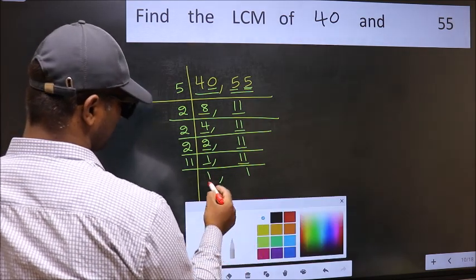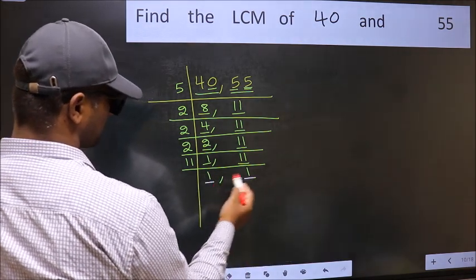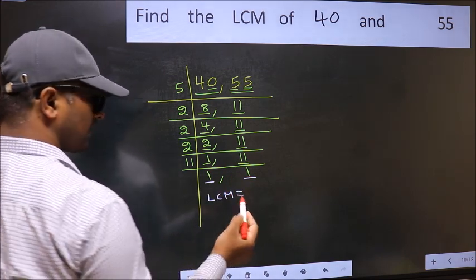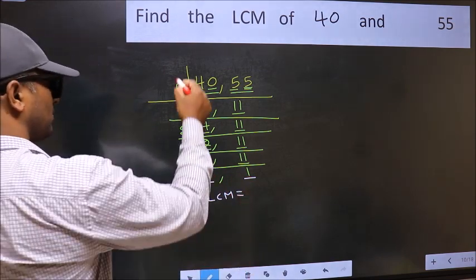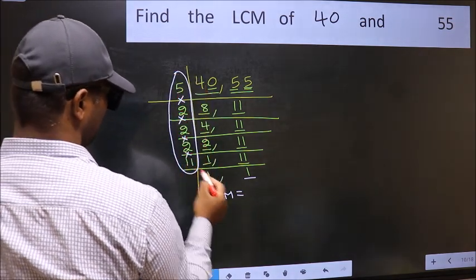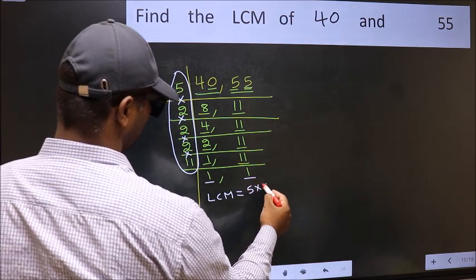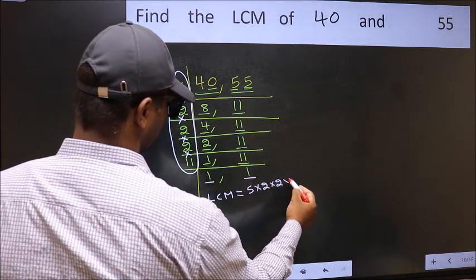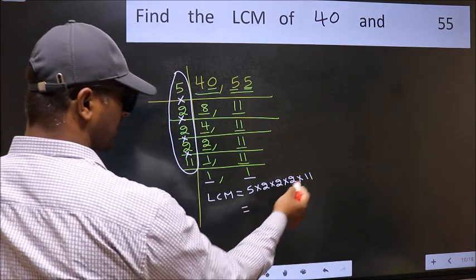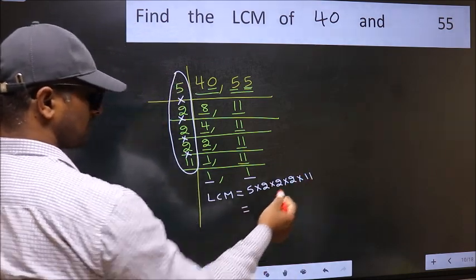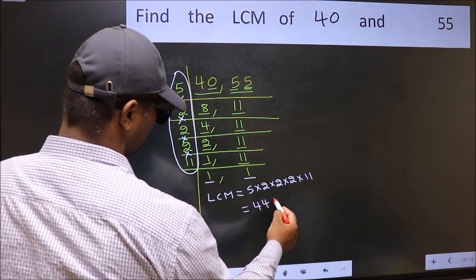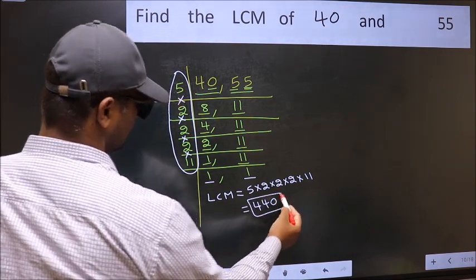We got 1 in both places. So our LCM is the product of these numbers: 5 times 2, times 2, times 2, times 11. When we multiply these numbers, we get 440 as our LCM.